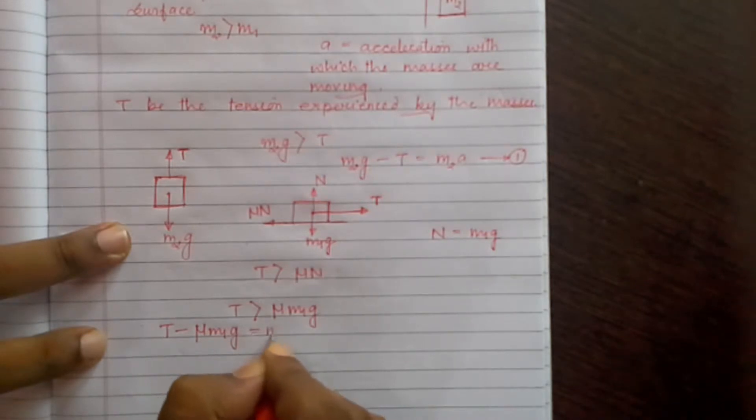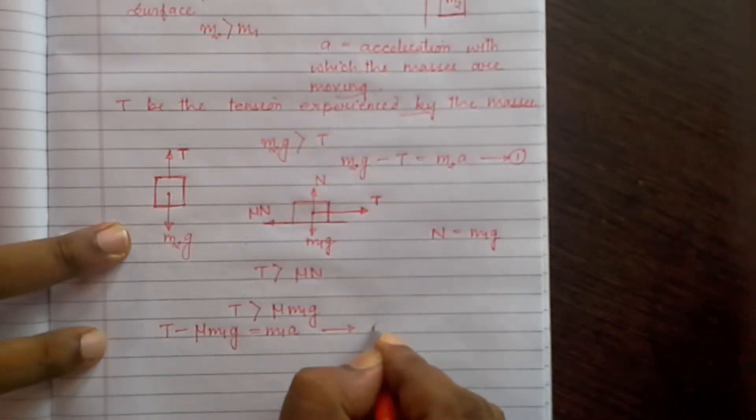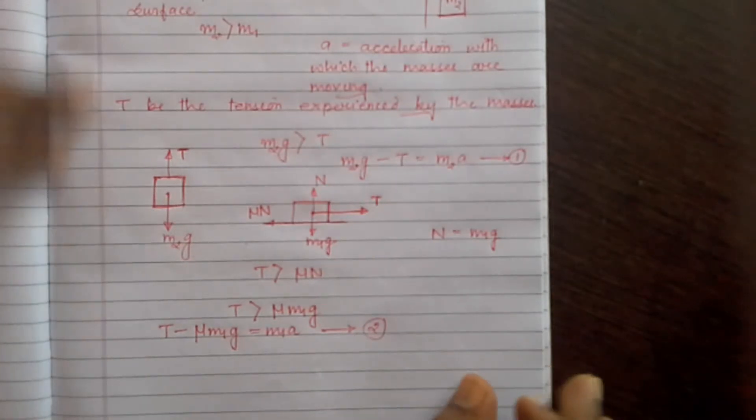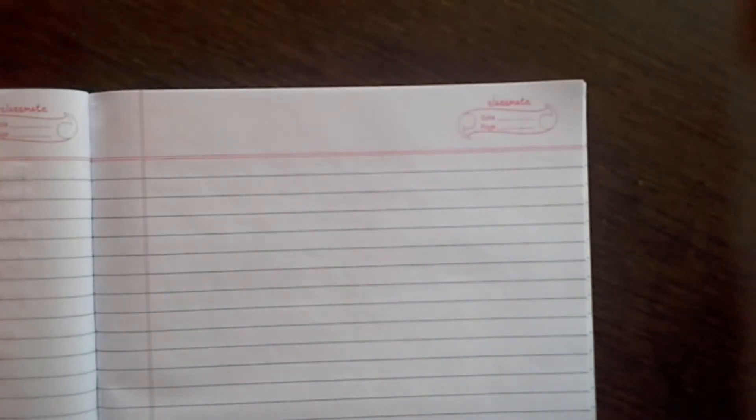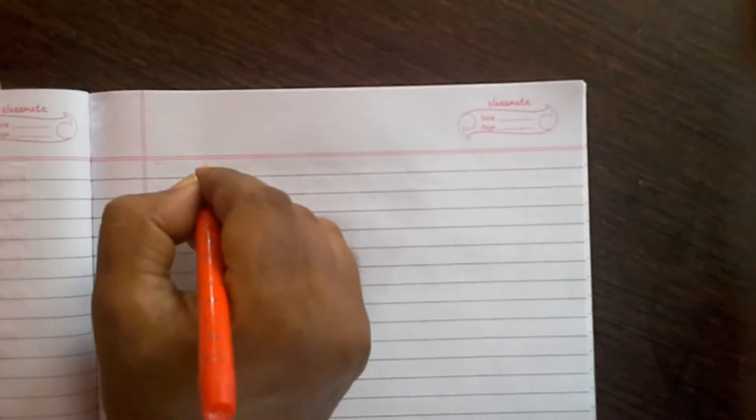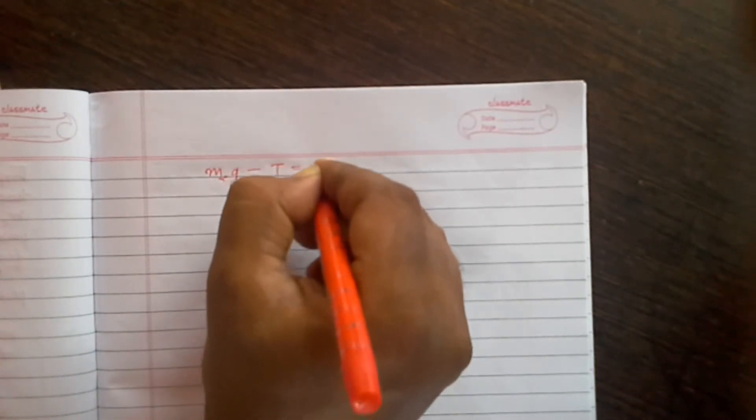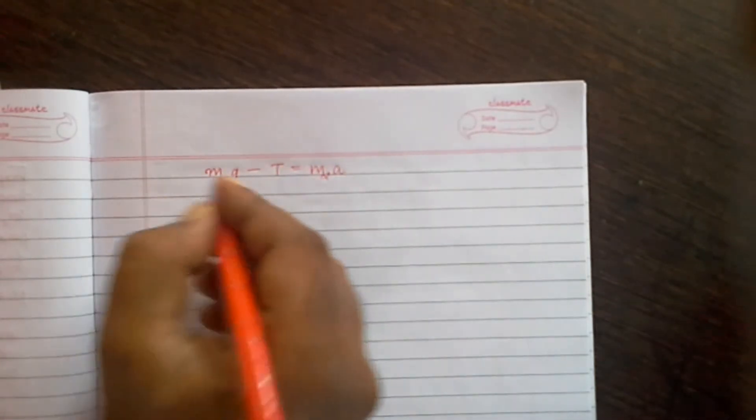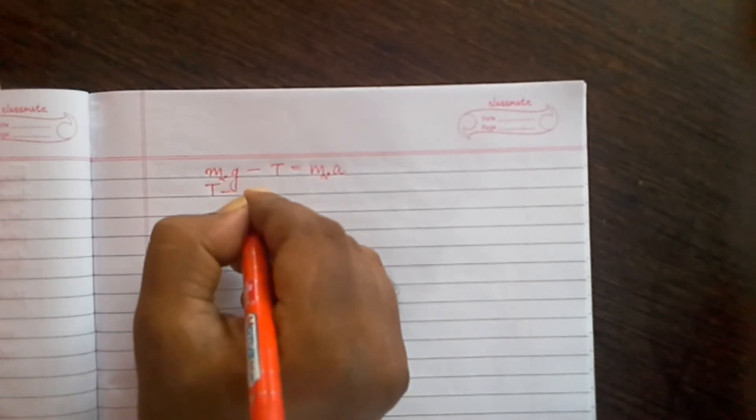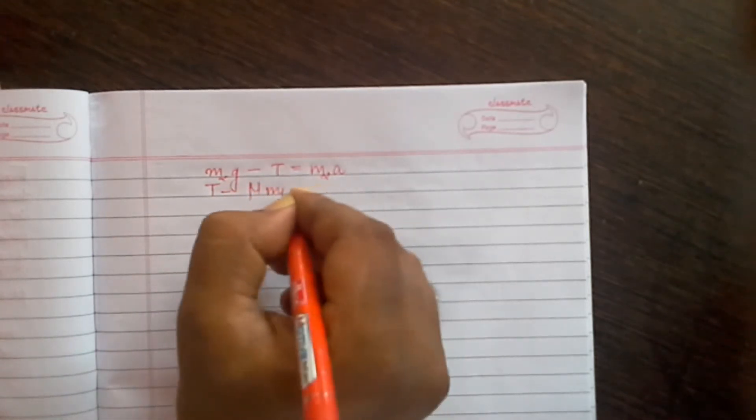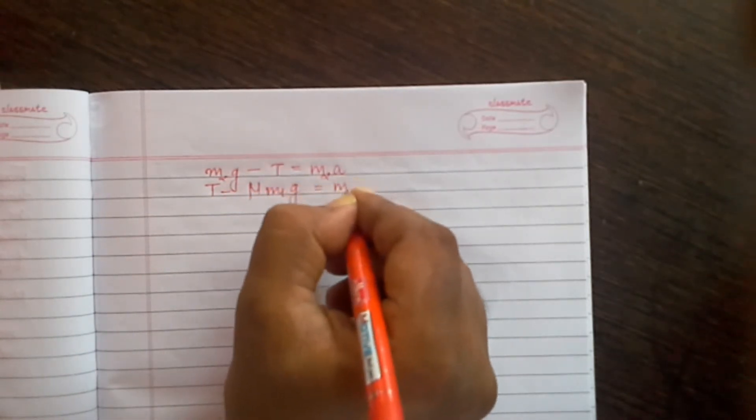Or T minus mu times M1g is equal to M1a. Let us call this equation 2. So now adding equations 1 and 2: equation 1 is M2g minus T equals M2a, and T minus mu times M1g equals M1a.